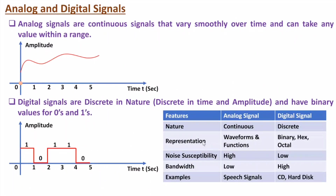To represent analog signals, we need waveforms and functions, while digital signals can be represented in binary, hexadecimal, and octal systems. Regarding noise susceptibility, analog signals have higher noise susceptibility while digital signals have lower noise susceptibility. The reason is that digital signals have only two values of amplitude, while analog signals have variable, continuous amplitude. Regarding bandwidth, analog signals require lower bandwidth while digital signals require higher bandwidth.